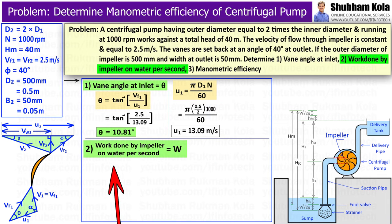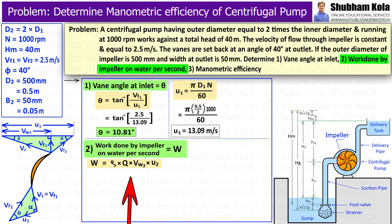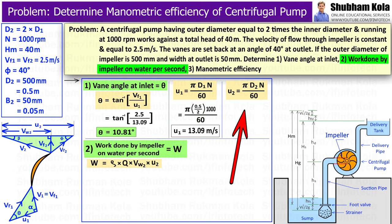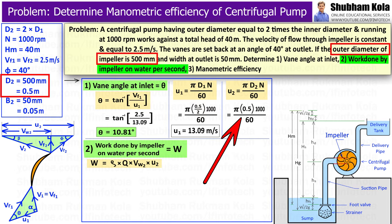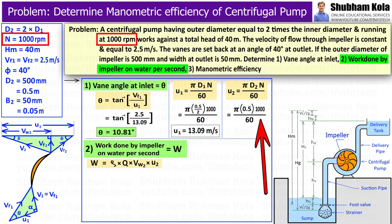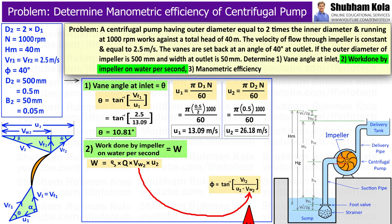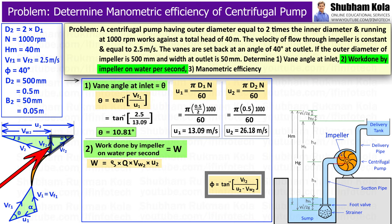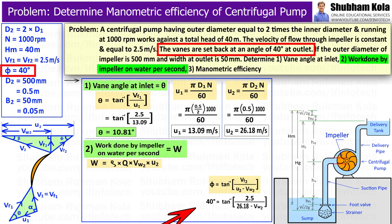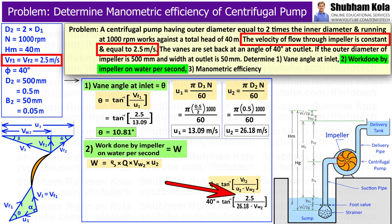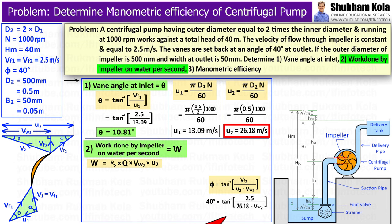Next, we calculate work done by the impeller on water per second, given by the formula: Work done per second = ρ Q Vw2 U2. U2 is calculated as π D2 N / 60, where D2 = 0.5 m and N = 1000 rpm, giving U2 = 26.18 m/s. Vw2 is found from tan φ = Vf2 / (U2 − Vw2), where φ = 40 degrees and Vf2 = 2.5 m/s, giving Vw2 = 23.2 m/s.